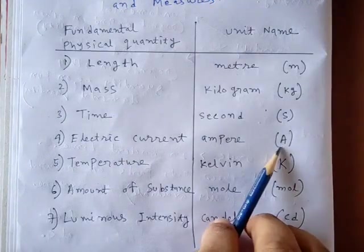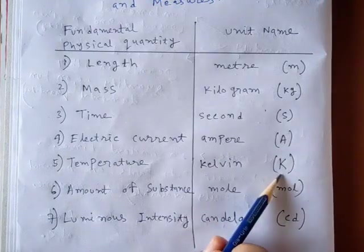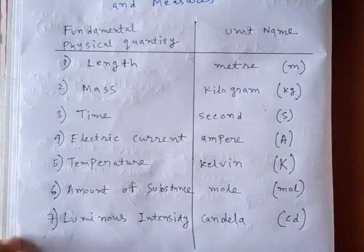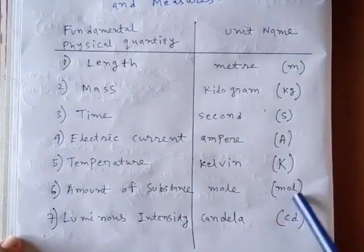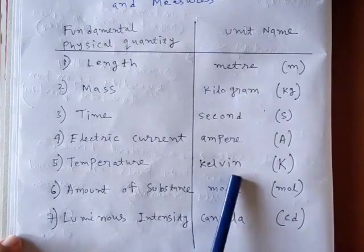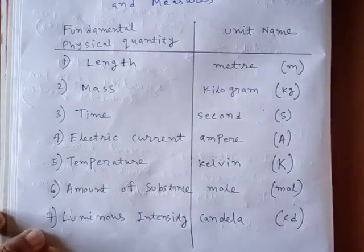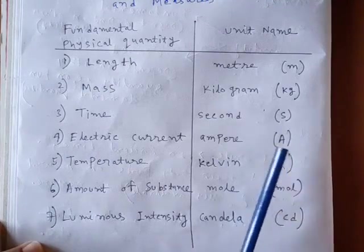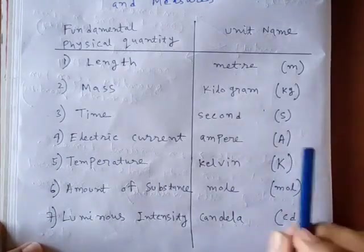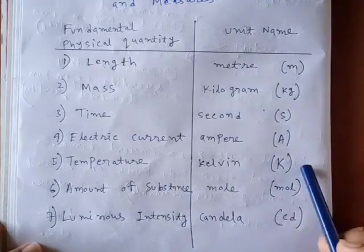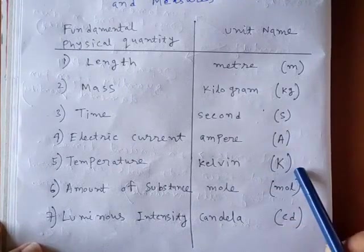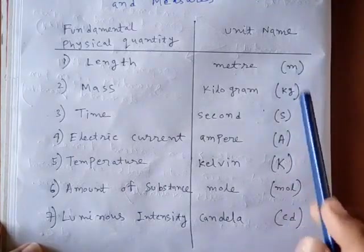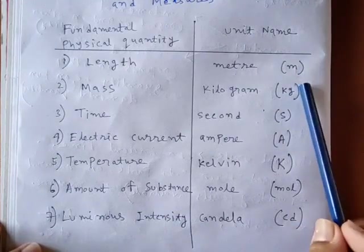Now here you see that this ampere is in capital letter, this Kelvin is in capital letter. But in second or kg or meter, those are in small letter. So there is a rule to write the symbols. If the unit is named after a scientist, the symbol should be in capital letter. Because we know Lord Kelvin and Ampere are the two important scientists of our modern era. So those symbols are in capital letter. And rest, they are not named after scientists, so their symbols are in small letters.